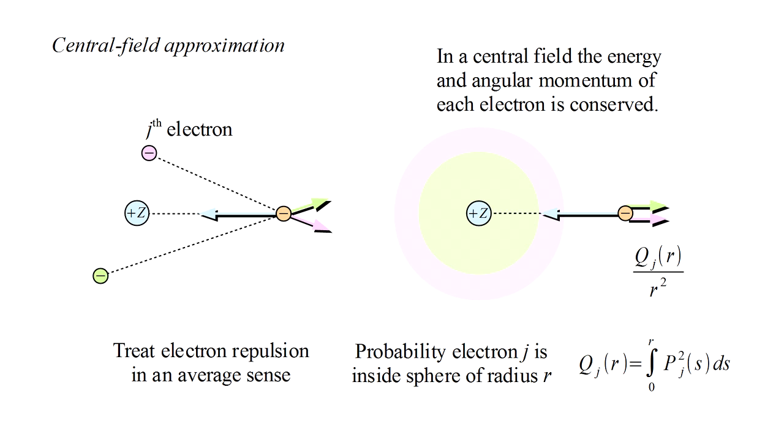The energy and angular momentum of an electron moving in a central field is conserved. In the central field approximation, therefore, we can treat each electron as being in an orbital with definite energy and angular momentum.